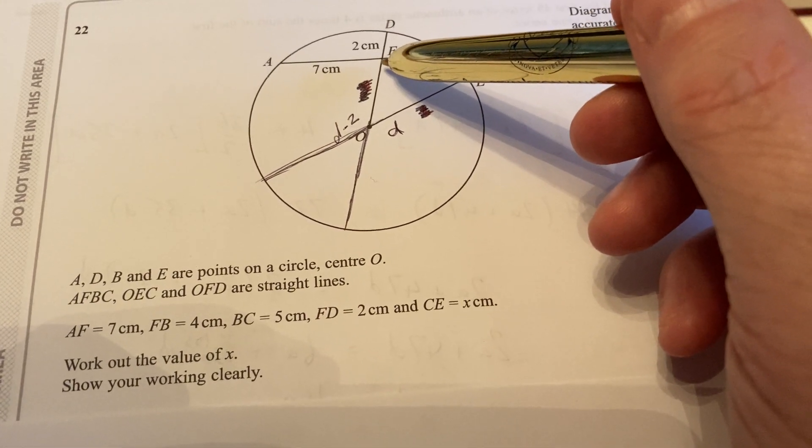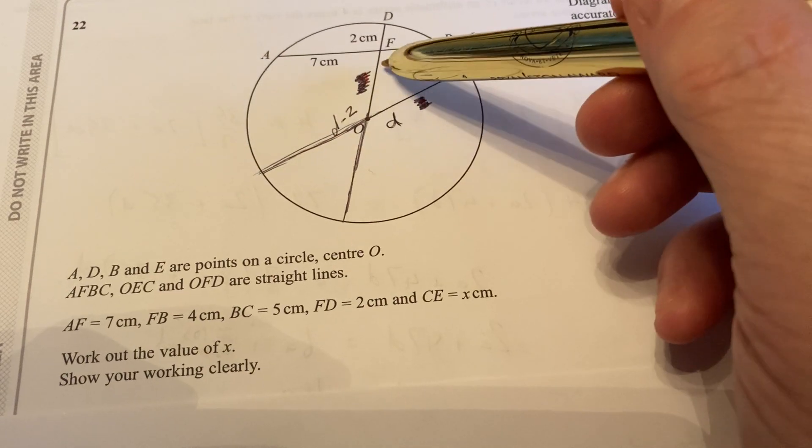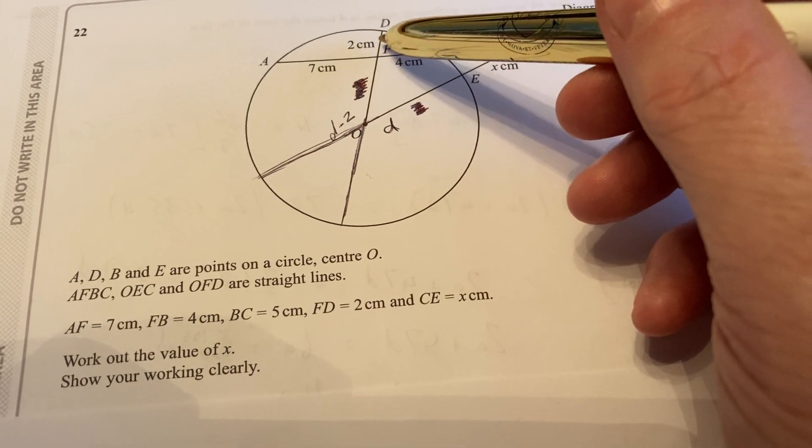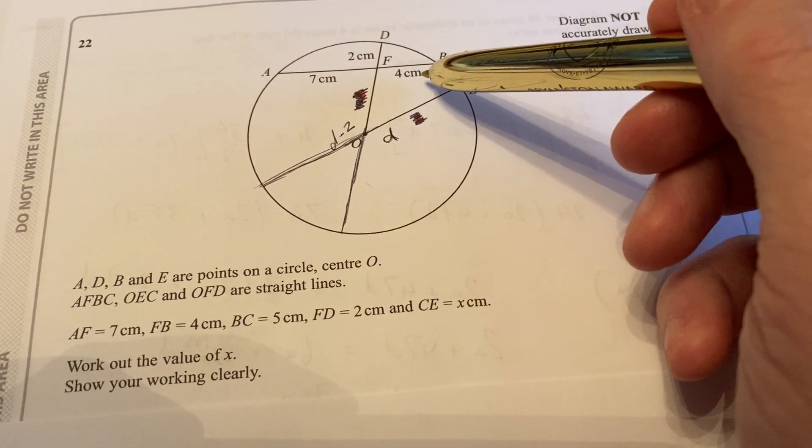So this bit up to where it intersects, just here, I'm going to call D minus 2. So that bit there, D minus 2, and the bit above it is 2. It's a diameter, altogether D for diameter. This other one, 7 and 4.